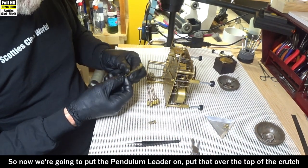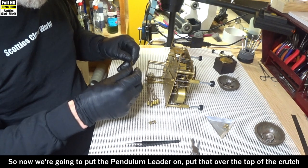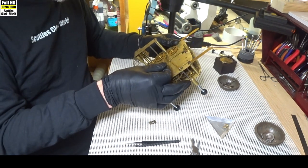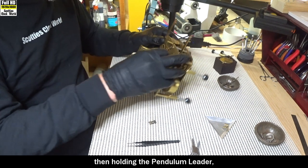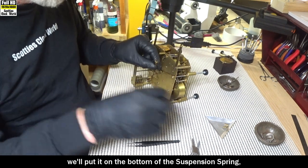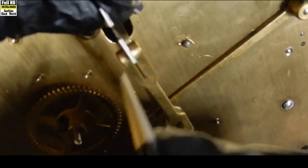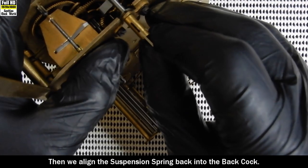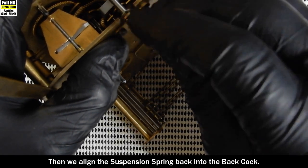So now we're going to put the pendulum leader on. Put that over the top of the crutch. Goes in that little hole there. Then, holding the pendulum leader, we put it on the bottom of the suspension spring over those two pins that are under there. Then we align suspension spring back into the back cock.